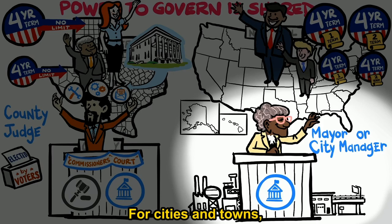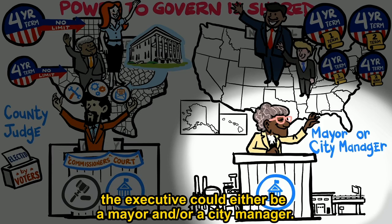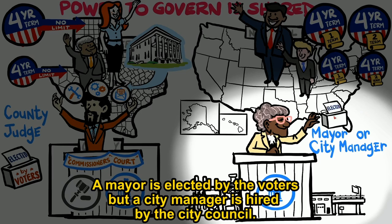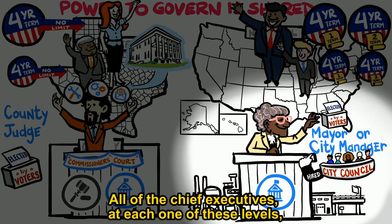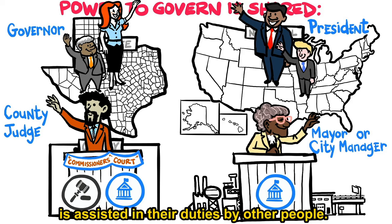For cities and towns, depending on the system of city government that the city or town has, the executive could either be a mayor and/or a city manager. A mayor is elected by the voters, but a city manager is hired by the city council. All of the chief executives at each one of these levels is assisted in their duties by other people.